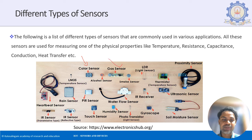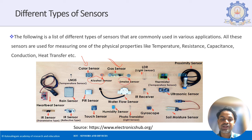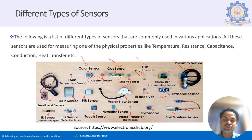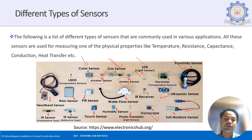Next is the gas sensor, which can detect LPG, carbon dioxide, and similar gases. Alcohol sensor can detect whether a person is drunk. Smoke sensor detects fire. LDR light sensor detects light intensity. Proximity sensor detects whether a person or object is present. Ultrasonic sensor measures distances. Thermistor measures temperature.